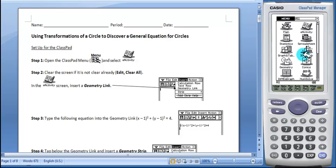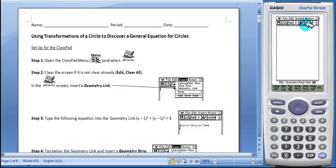First students will select E activity from the menu. Then students will insert a geometry link.